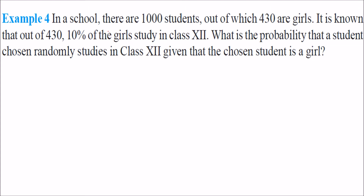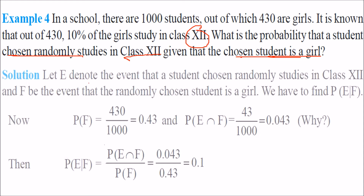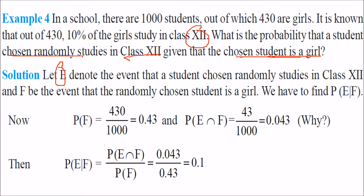In a school there are 1000 students, out of which 430 are girls. It is known that 10% of the girls study in class 12. What is the probability that a randomly chosen student studies in class 12 given that the chosen student is a girl? Let E be the event that the student studies in class 12, and F be the event that the chosen student is a girl. We need to find P(E|F).